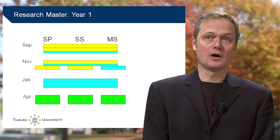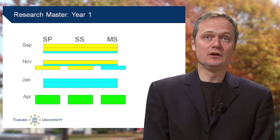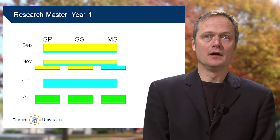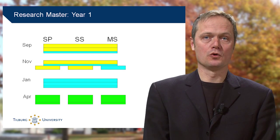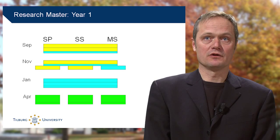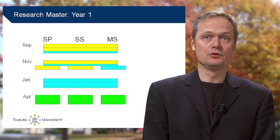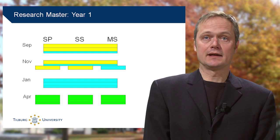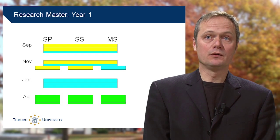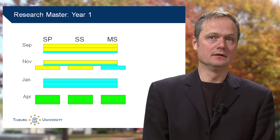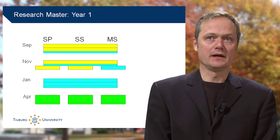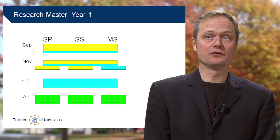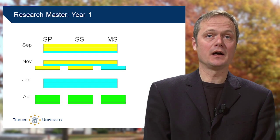Most rectangles are positioned underneath all three minors — these are the common courses, which are followed by all students. Some rectangles fall underneath one minor only; these are minor-specific courses, recommended for a particular minor.